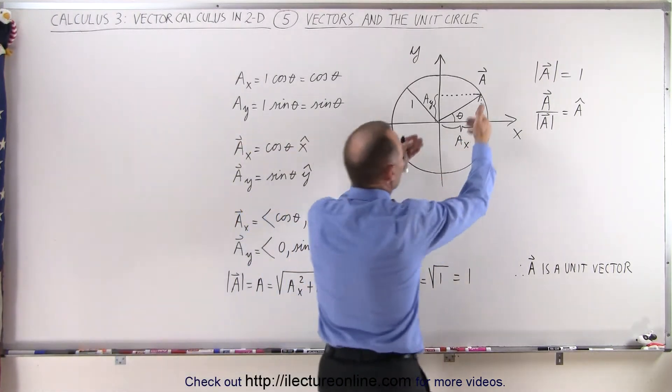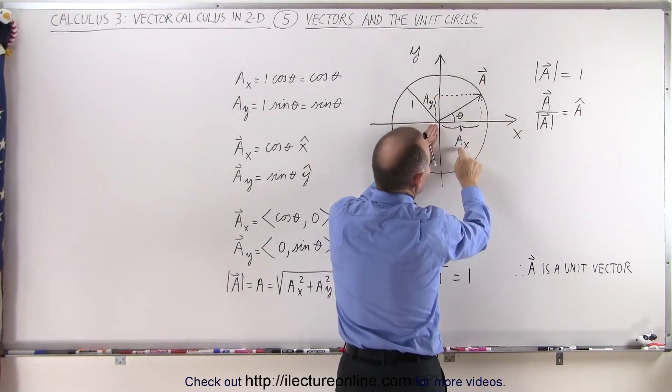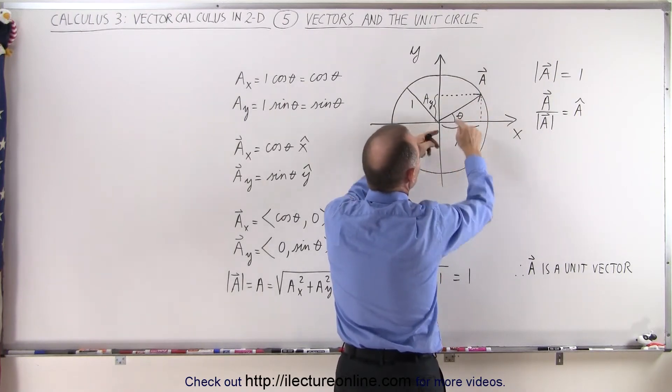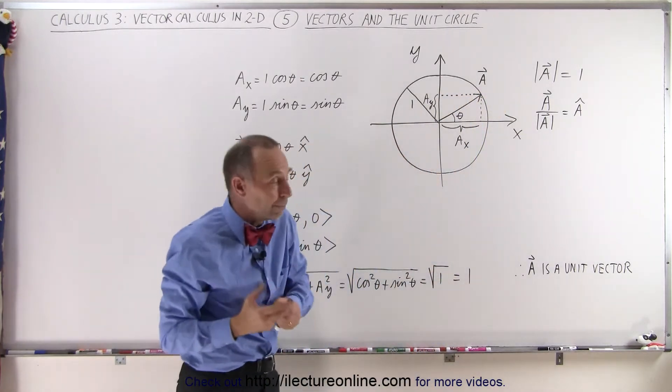Notice that when we project the vector a onto the x-axis, this distance right here is equal to the magnitude of the x component. And when we project the vector onto the y-axis, this distance there is the magnitude of the y component.